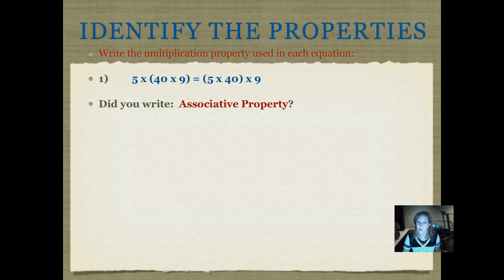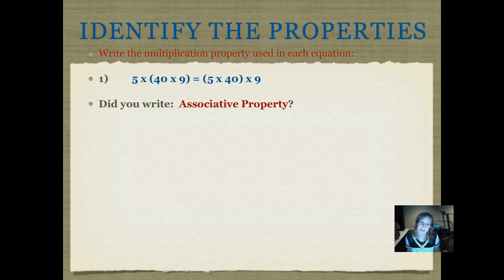Did you write associative property? Let's look. In the sets of numbers on both sides of the equal sign, the numbers are in the same order — the first number is 5, the middle number is 40, and the last number is 9. We didn't change the order of the numbers at all, but we did group them differently. On the left of the equal sign, we grouped 40 times 9; on the right side, we grouped 5 times 40. They equal the same thing, we just grouped them differently. The associative property is about who that 40 hangs around — is he going to hang around with the 5 or with the 9?